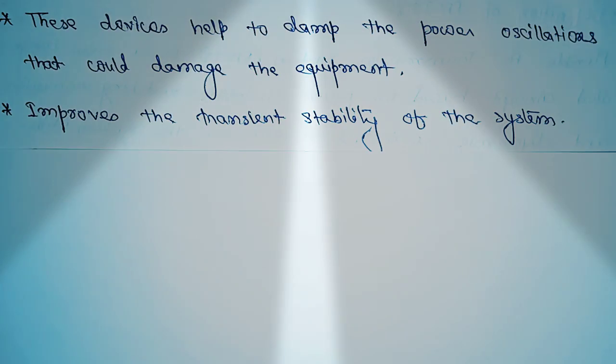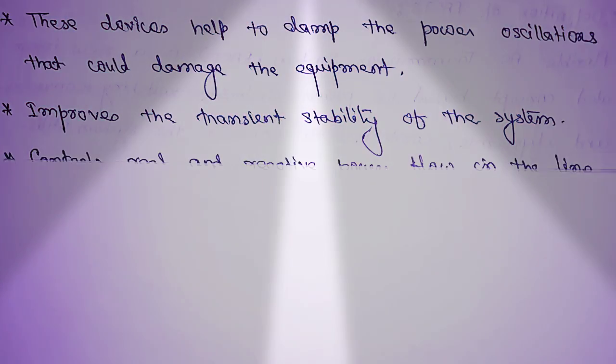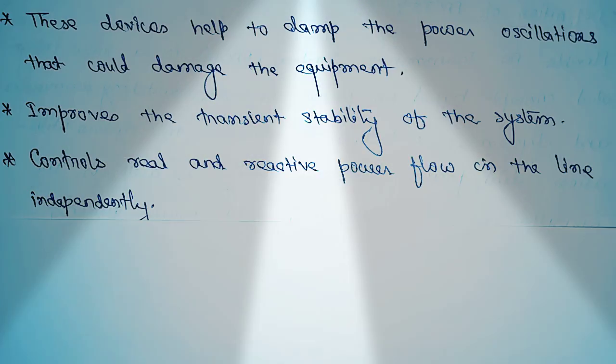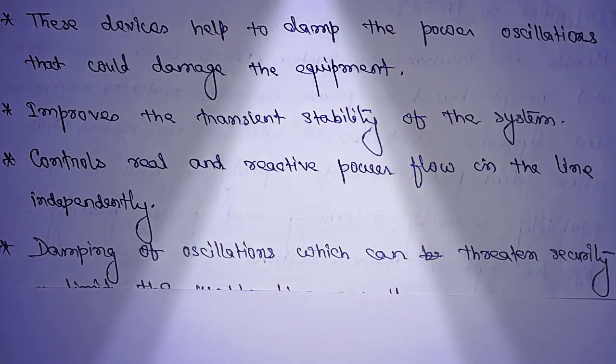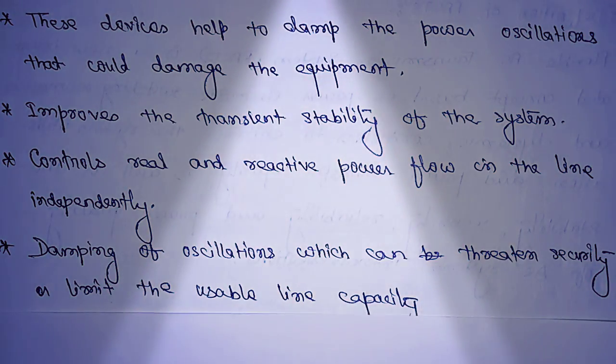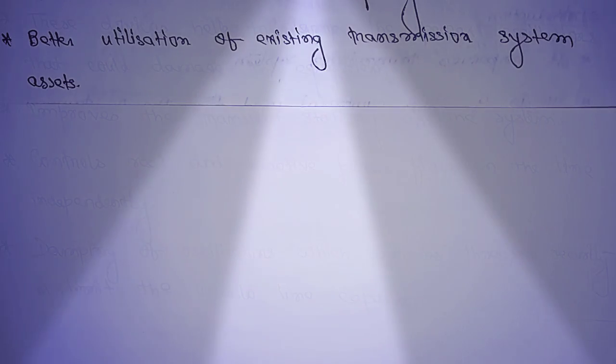These devices help to damp the power oscillations that could damage the equipment. Improves the transient stability of the system. Controls real and reactive power in the line independently, damping of the oscillations which can threaten security or limit the usable line capacity.